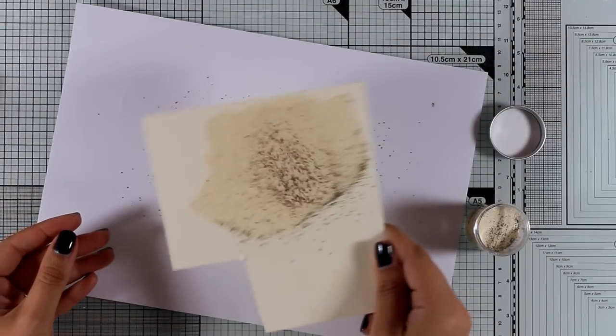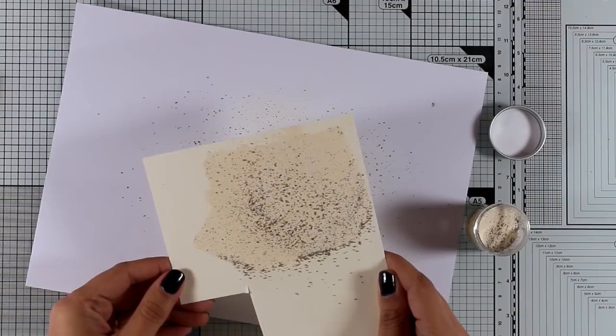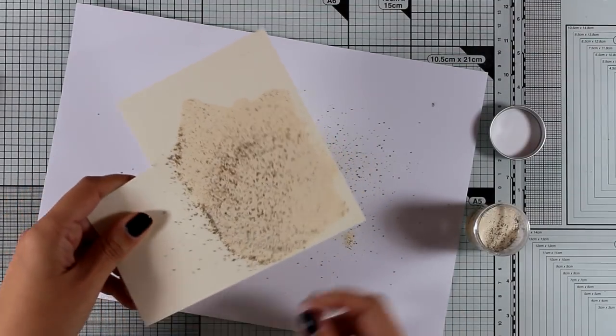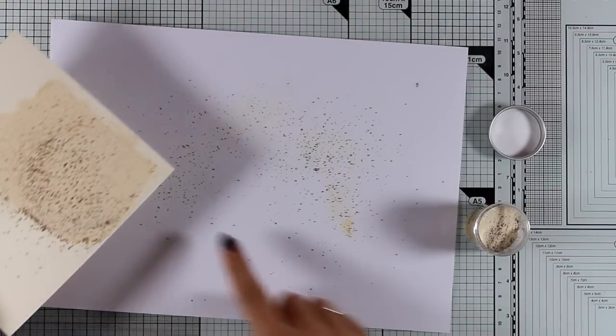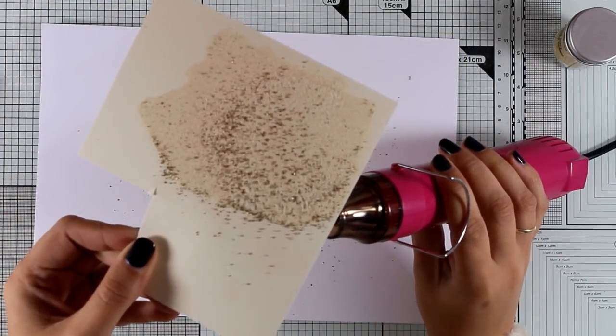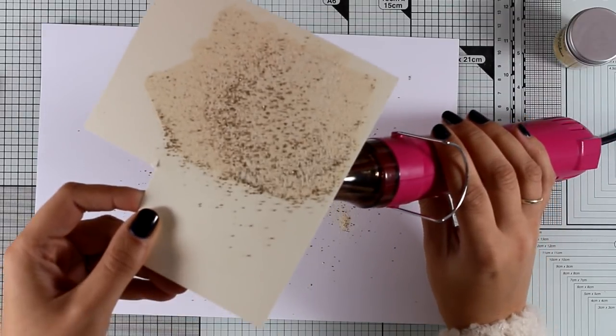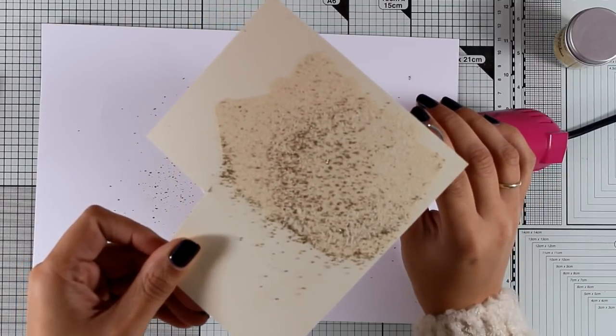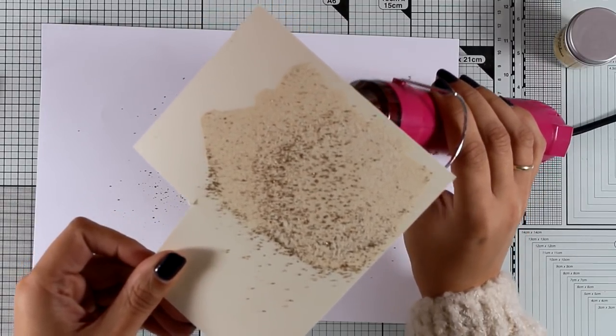So what you need to do is to not tap it off, otherwise you will lose all the glitter. Just leave it there as it is and use your heat gun underneath the paper. This way all the golden particles are going to be trapped as the rest of the powder melts, and they're not going to fly all over the place and fall off your paper.